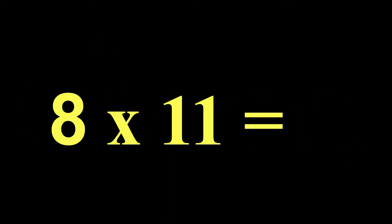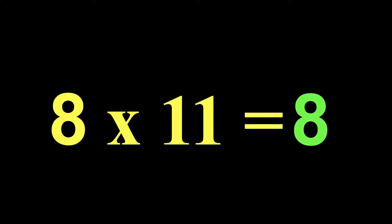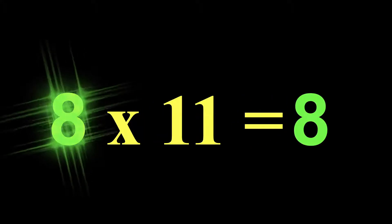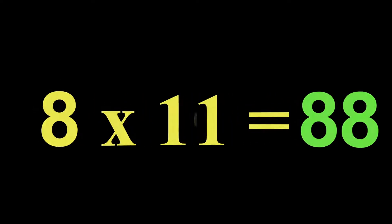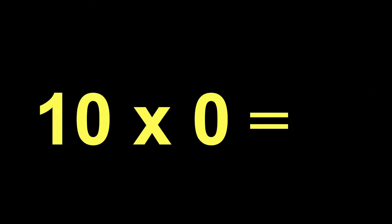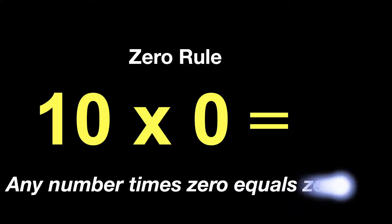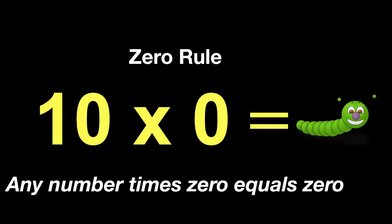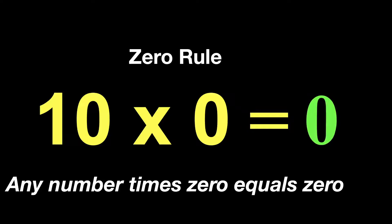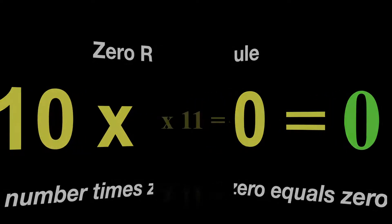8 times 11 — remember, that is our 11 rule. So we take the 8 and we are just going to double it. So 8 times 11 is 88. 10 times 0 — well, that is just easy. That is the 0 rule: any number times 0 equals 0. Wally wanted to show us where, and the 0 goes right there. So 10 times 0 equals 0.